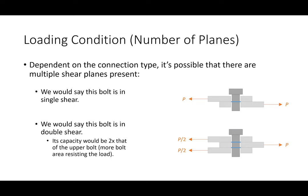The number of shear planes is literally just how many different planes are present in the connection that would need to shear for the bolt to fully fail. For a basic lap connection, there's only one plane passing through the bolt — we say that bolt is in single shear. For a splice connection it's possible that bolts are in double shear. That doesn't mean the bolt got magically twice as strong, but in order to fail the bolt in shear you have to shear through twice as much area. So the shear capacity in double shear is double that of single shear.